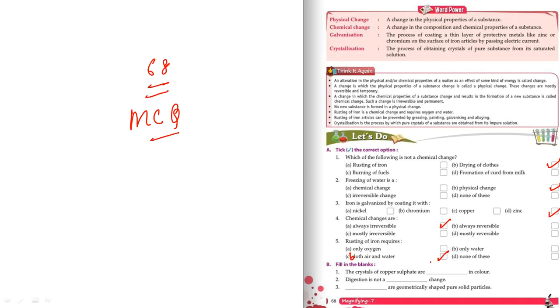Coming on the next part — filling in the blanks. The crystals of copper sulfate are deep blue in color. I am writing here: deep blue in color.